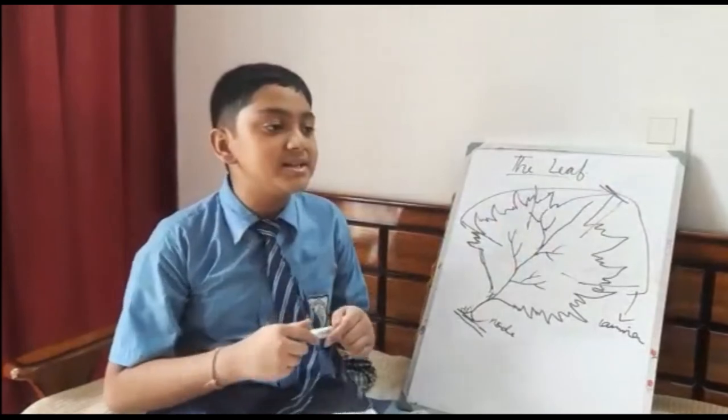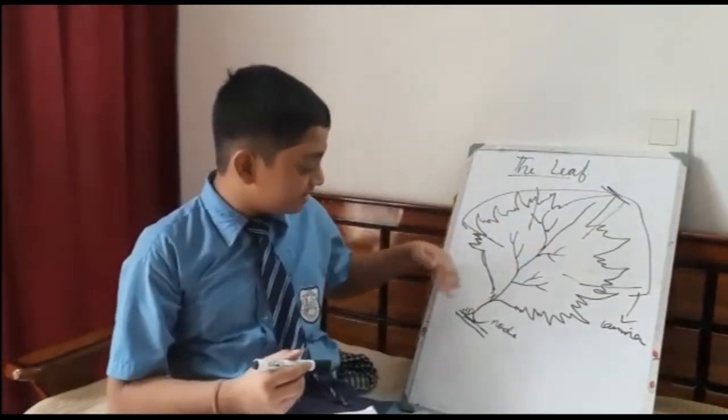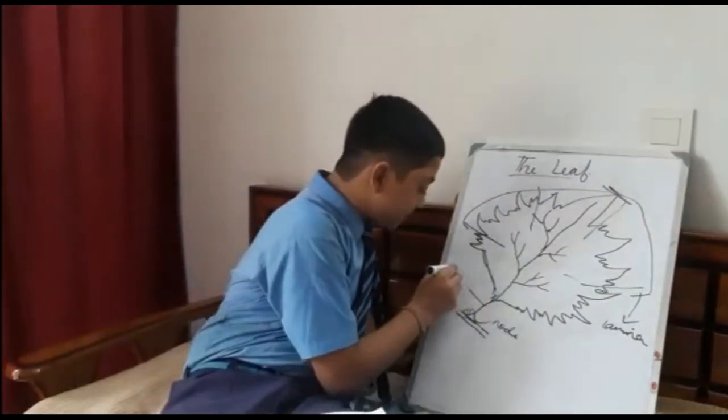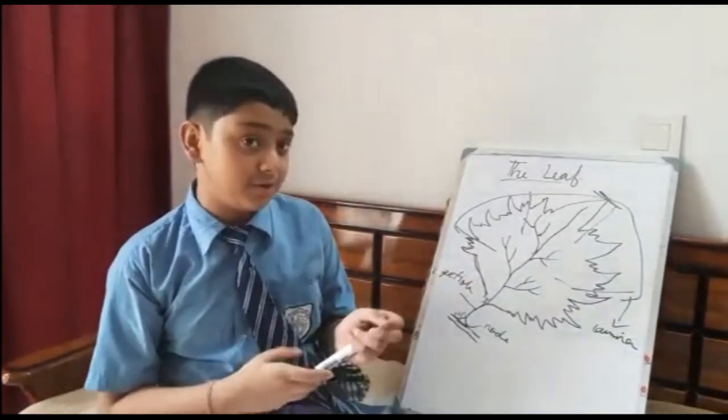Now we will learn what is the leaf stalk. You can see this is the short cylindrical part that joins the leaf to the stem. This part is called the petiole. Some leaves do not have a petiole and directly arise from the stem.